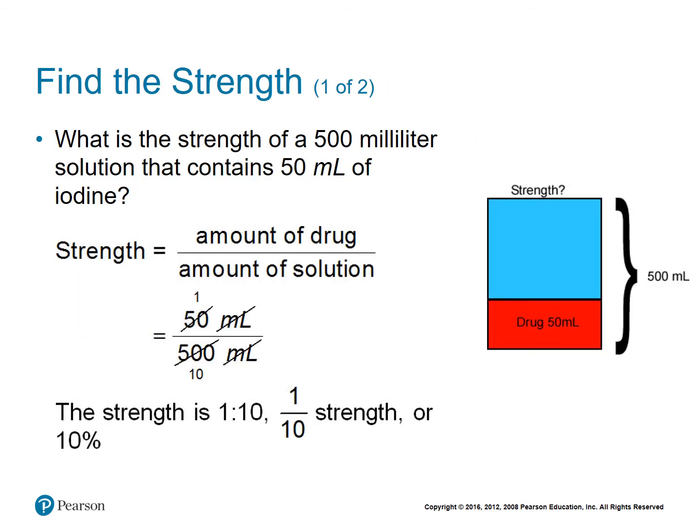Let's try an example. What is the strength of a 500 milliliter solution that contains 50 milliliters of iodine? We use our formula: strength equals the amount of the drug divided by the amount of the solution. So 50 milliliters of iodine is our numerator, divided by 500 milliliters of solution. We simplify our fraction and get one over 10 — so the strength is one to 10: one part drug for every 10 parts solution, which you could say is one-tenth strength or 10% strength.